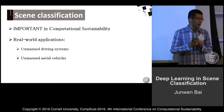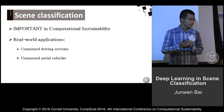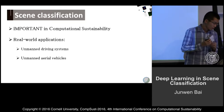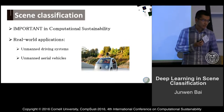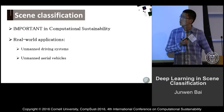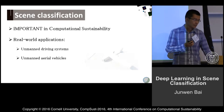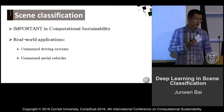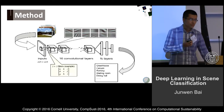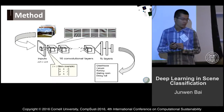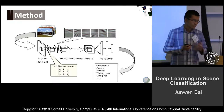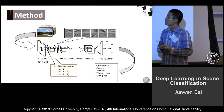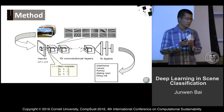For example, unmanned driving systems and unmanned aerial vehicles all need scene classification to better understand the environment to help control the vehicles. To solve this challenge, we designed a neural network for this task based on a VGG model.